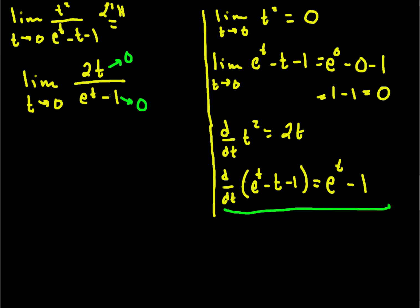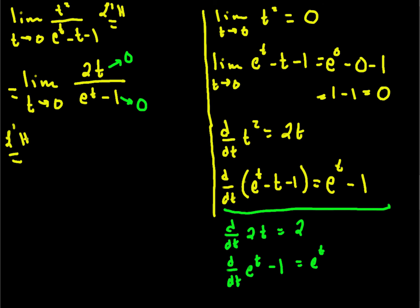But nobody said we couldn't use L'Hôpital's rule more than once. Since the top's going to 0 and the bottom's going to 0, we compute their derivatives again. The derivative of 2t is 2, and the derivative of e to the t minus 1 is e to the t. So using L'Hôpital's rule a second time, this limit is the limit as t goes to 0 of 2 divided by e to the t. This is a perfectly continuous function since e to the 0 is 1, and so this is equal to 2.